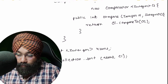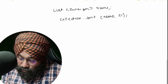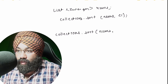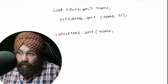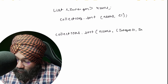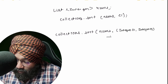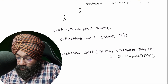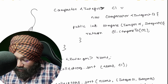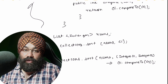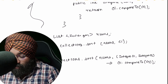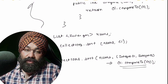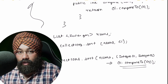What you can do instead is simply write Collections.sort(nums, (Integer o1, Integer o2) -> o1.compareTo(o2)). That much code is replaced by only this one line. There are clear advantages — you are defining the logic where you need it, not at some other place and calling it from there. So defining it at the point of use is also an advantage.